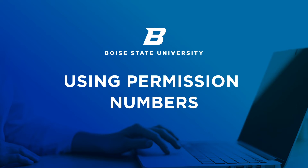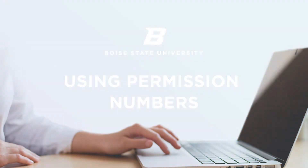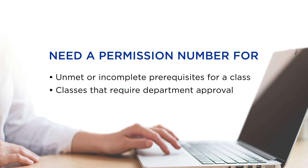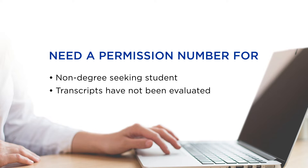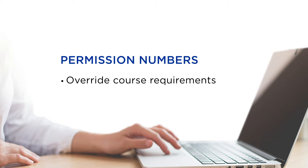Welcome to Using Permission Numbers, a step-by-step tutorial. If you would like to add a class where you have not met the prerequisites, or the course requires department approval, you will need to get a permission number in order to enroll. This is also true if you're a non-degree-seeking student, or if Boise State has not evaluated your other college transcripts. Permission numbers override course requirements, allowing you to enroll in a course with special permission.